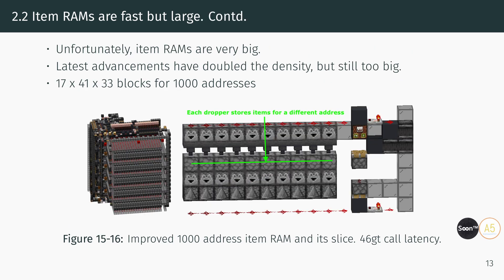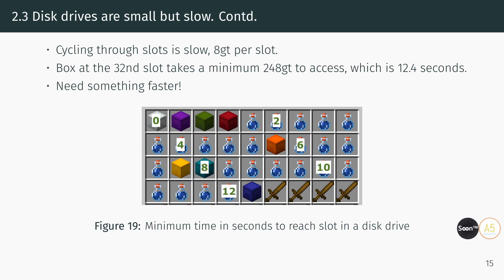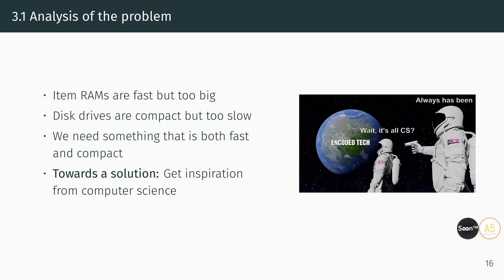However, the large size of the item RAM is a significant drawback, and people have been looking for ways to reduce the size by increasing density. Latest advancements have doubled the density, halving the size of the device without sacrificing retrieval speed, but it is still prohibitively large for most applications. On the other end of the spectrum, we have the item disk drive, which can store and retrieve items in linear time. It is much more compact but also a lot slower — it stores multiple addresses in a double chest, and retrieval time is proportional to the number of addresses, limited by hopper speed at 8 game ticks per item. A box at the 30th slot will take a minimum of 248 game ticks to retrieve, about 12.4 seconds. To recap: item RAMs are too big and disk drives are too slow.